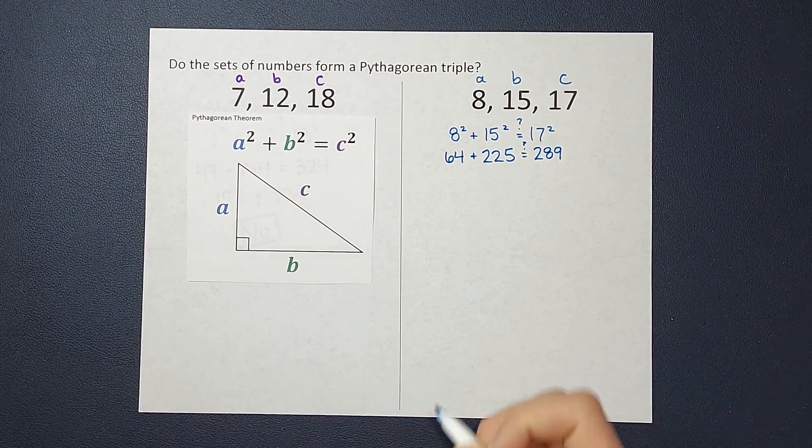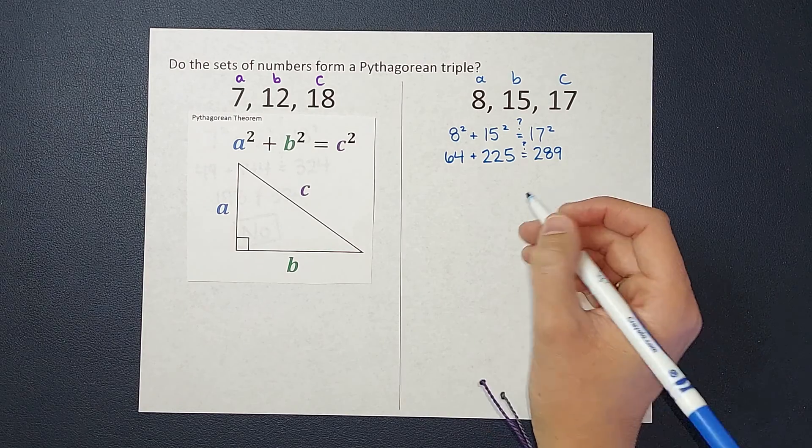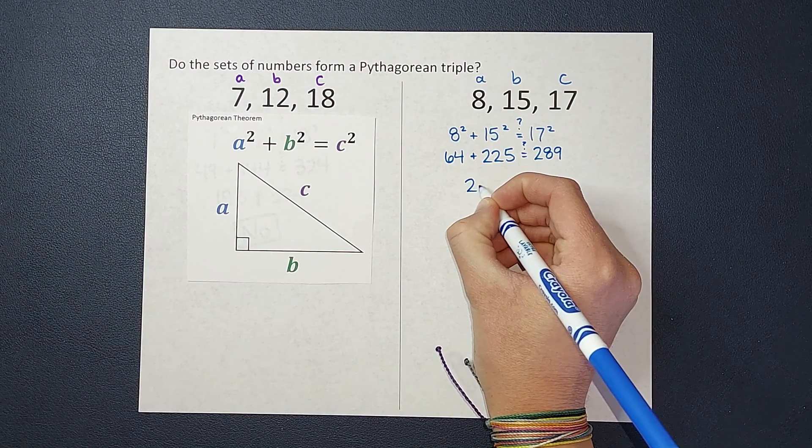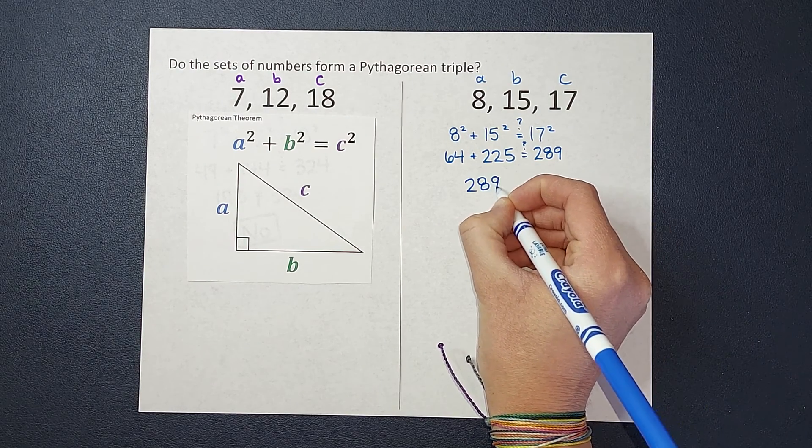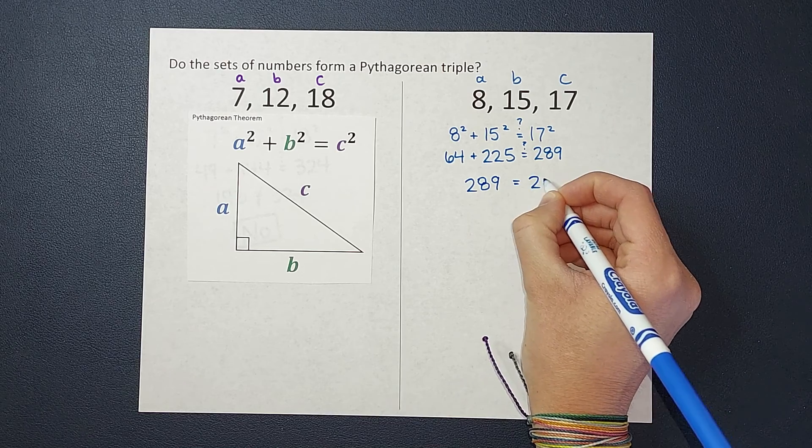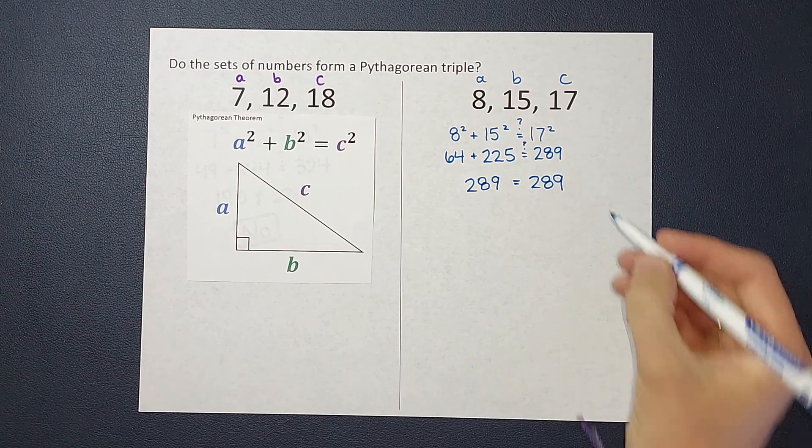When I add this side together, I get 64 plus 225, which gives me 289, is equal to 289. Oh, my gosh, that looks true to me.